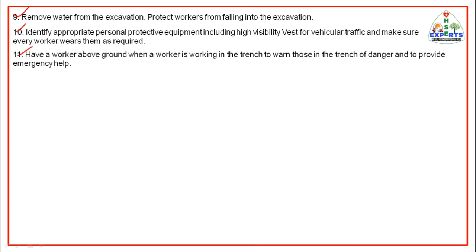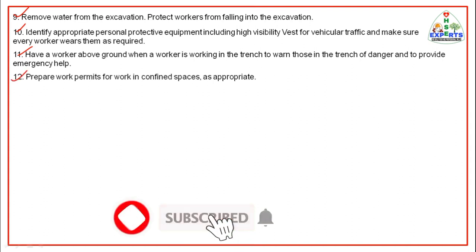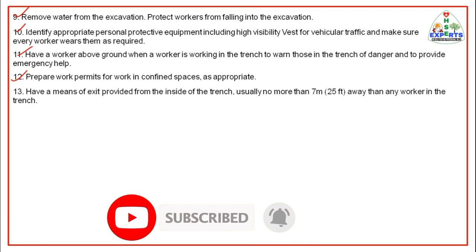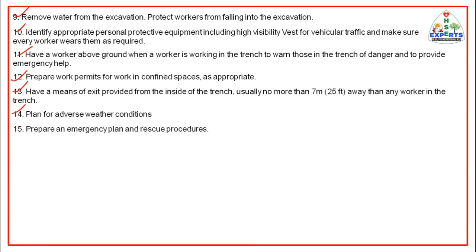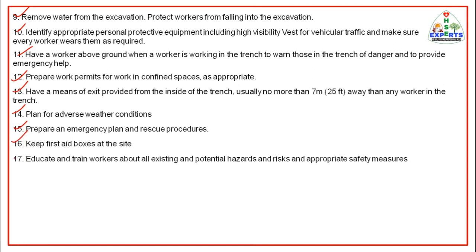Have a worker above ground when a worker is working in the trench, to warn those in the trench of danger and to provide emergency help. Prepare work permits for work in confined spaces as appropriate. Ensure means of exit from inside the trench are provided, usually no more than 7 meters or 25 feet away from any worker in the trench. Plan for adverse weather conditions. Prepare an emergency plan and rescue procedures, keep first aid boxes at the site. Educate and train workers about all existing and potential hazards, risks, and appropriate safety measures.